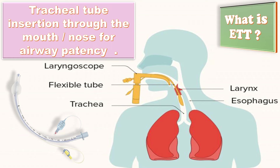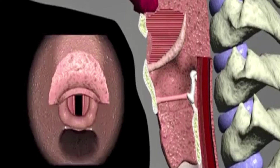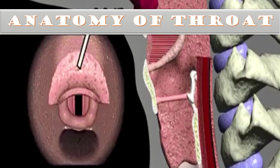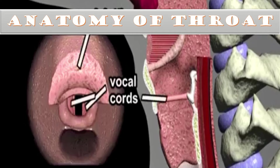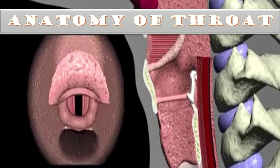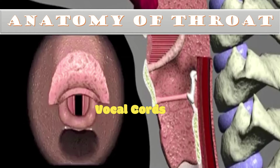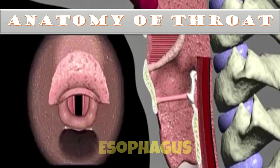Before explaining the steps of ETD insertion, let us briefly explain the anatomy of the throat. The image on the left depicts a view looking down the throat as one might see it during endotracheal intubation. At the front there is the epiglottis, and on the sides there are two vocal cords bilaterally. Behind the trachea, a view of the esophagus can be seen clearly.